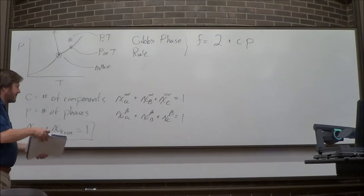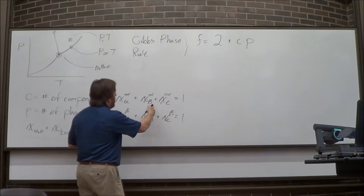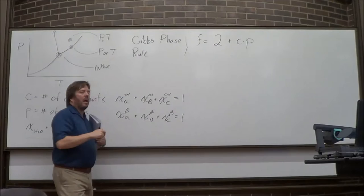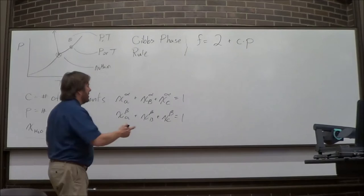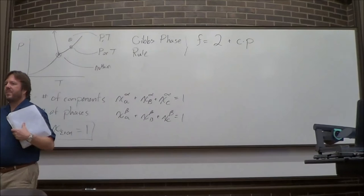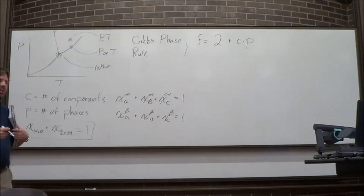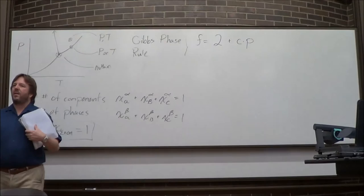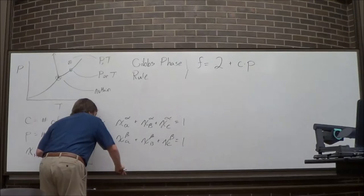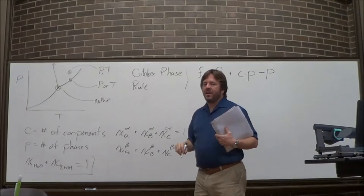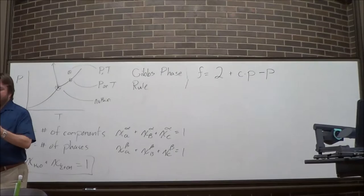For each phase, the mole fractions must sum to one, giving one equal sign per phase — and that didn't change with the number of components. But when I add a second phase (like an ice cube), I get another equal sign. With three phases (liquid, solid, vapor), I get three equal signs. So the mole-fraction constraint contributes P equal signs total, meaning we subtract P.